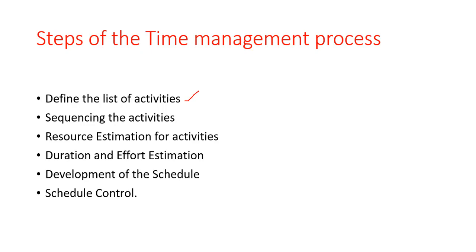Once those activities are identified, we have to arrange them in the form of a sequence. Sequence means determining which activity is to be done at the highest level and which activities are to be done at the lowest level. In addition to this, we also concentrate on the dependency of activities.